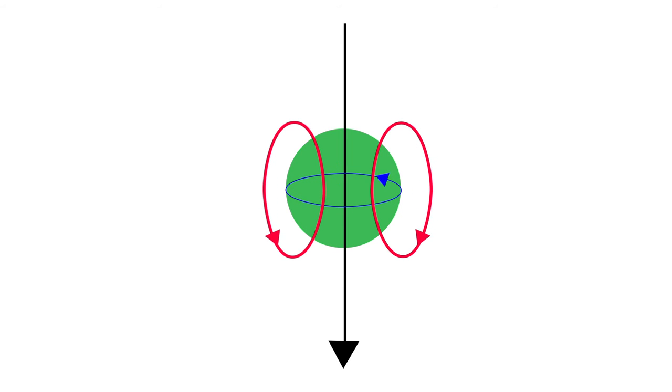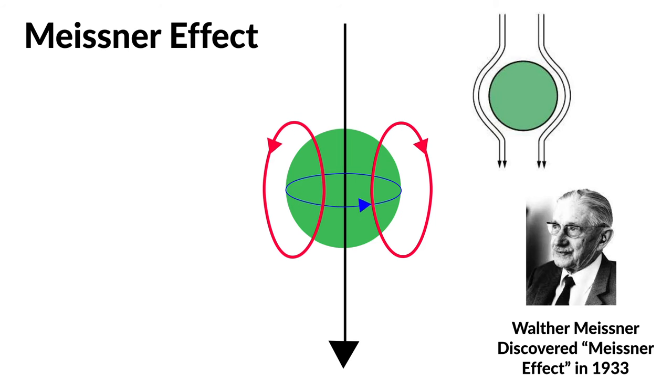Now we need to examine how superconductors interact with magnetic fields. When a magnet is placed above a superconductor, eddy currents are created that form an opposing magnetic field. This is possible because superconductors have such low resistances that charge is able to move freely. This is what we call the Meissner effect, discovered by German physicist Walter Meissner in 1933.